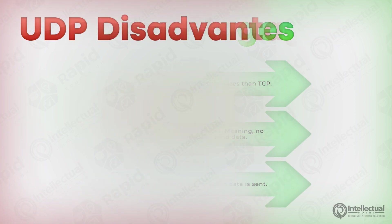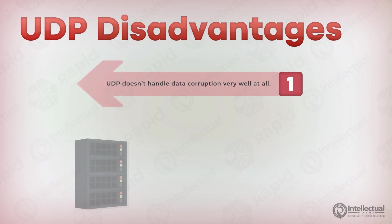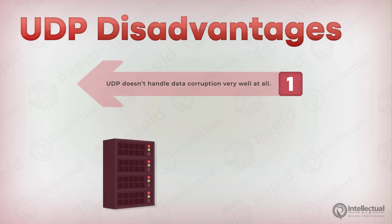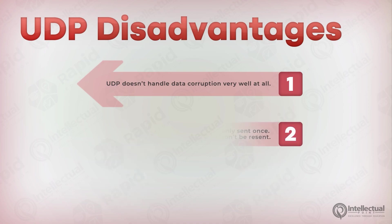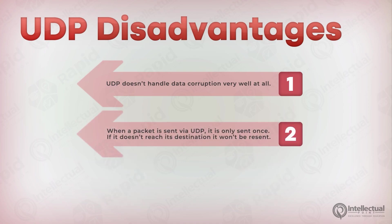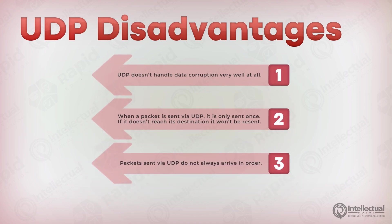However, there are several disadvantages to UDP. Firstly, UDP doesn't handle data corruption very well at all and is extremely unreliable for multiple reasons. When corruption is detected, in most cases, the data is simply discarded and the error isn't even recovered. Additionally, when a packet is sent via UDP, it is only sent once — if that packet never reaches its destination, it will never be attempted again. Not only that, packets sent via UDP do not always arrive in the order that they were sent.